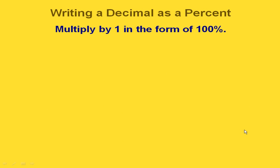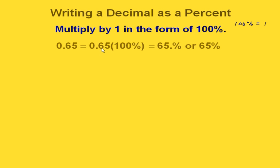We can also go the other direction. If we have a decimal and want to write it in percent form, we just multiply by 1 in the form of 100%. Now 100% is actually equal to 1. So if we start out with 0.65, multiplying it by 100% means we move our decimal point to the right two places — there are two zeros in 100. So it moves from there over two places, and we can write this as 65%.